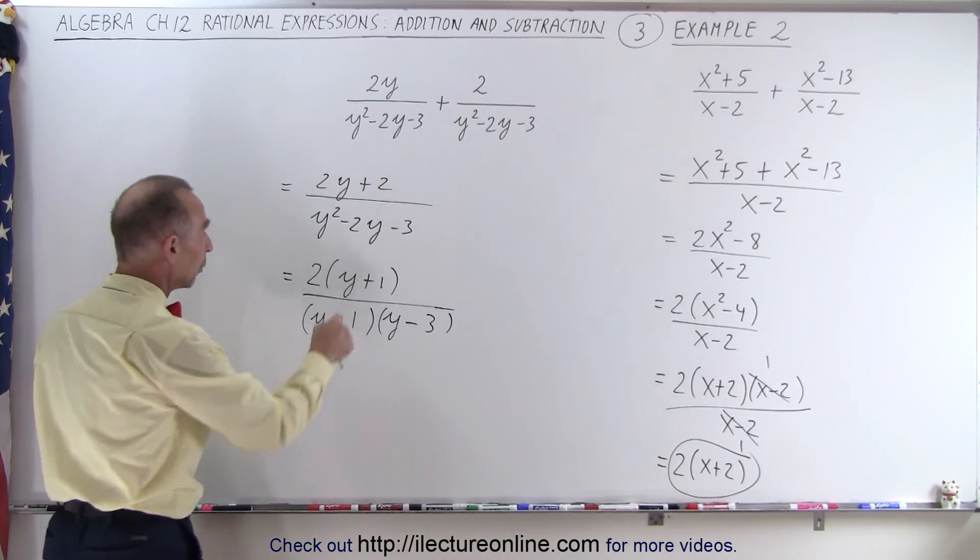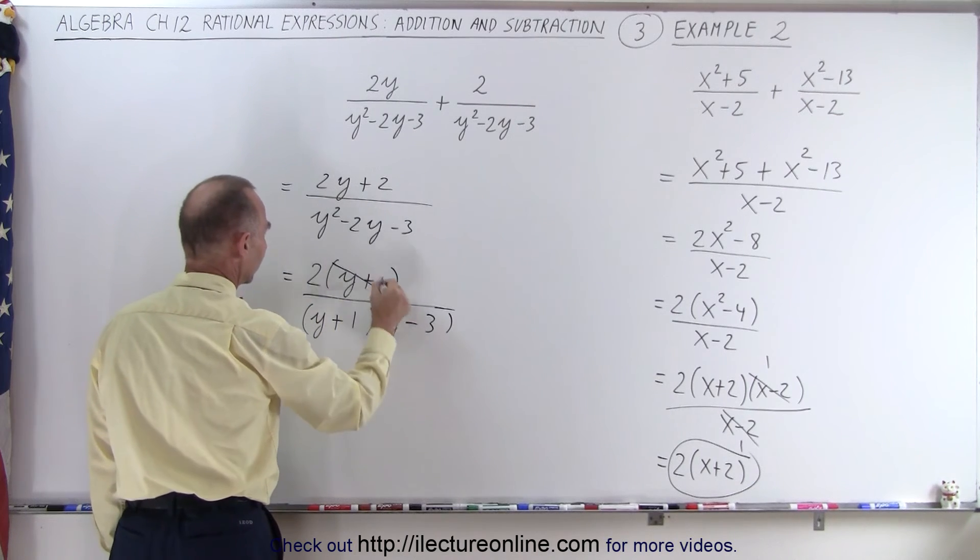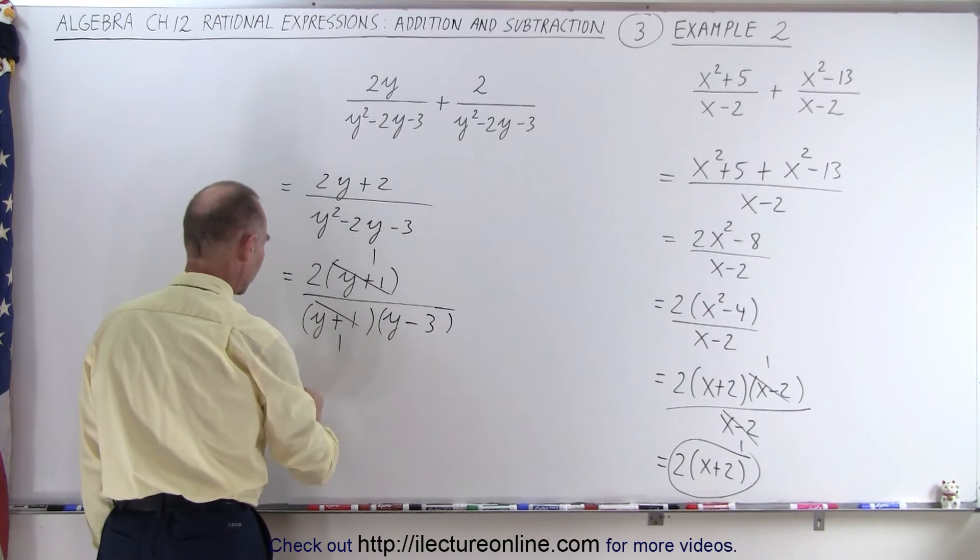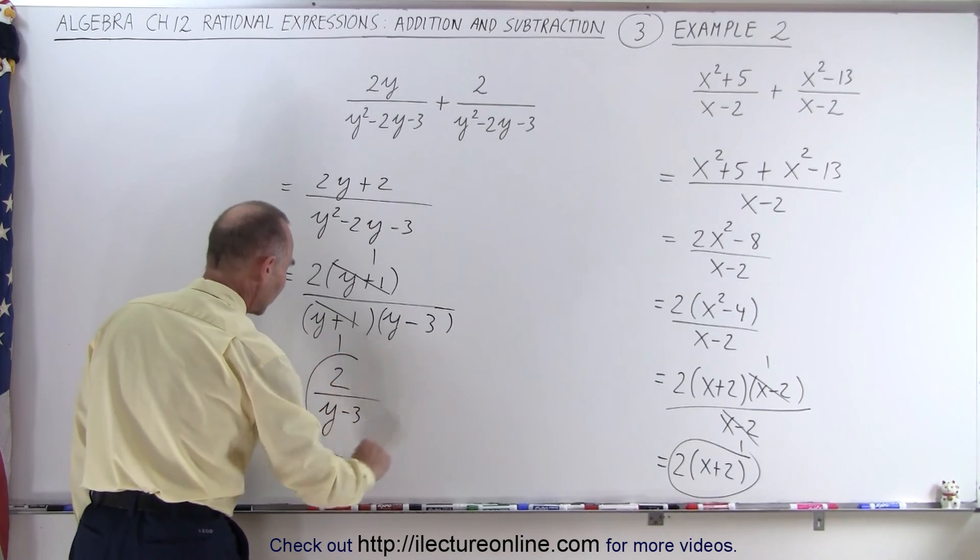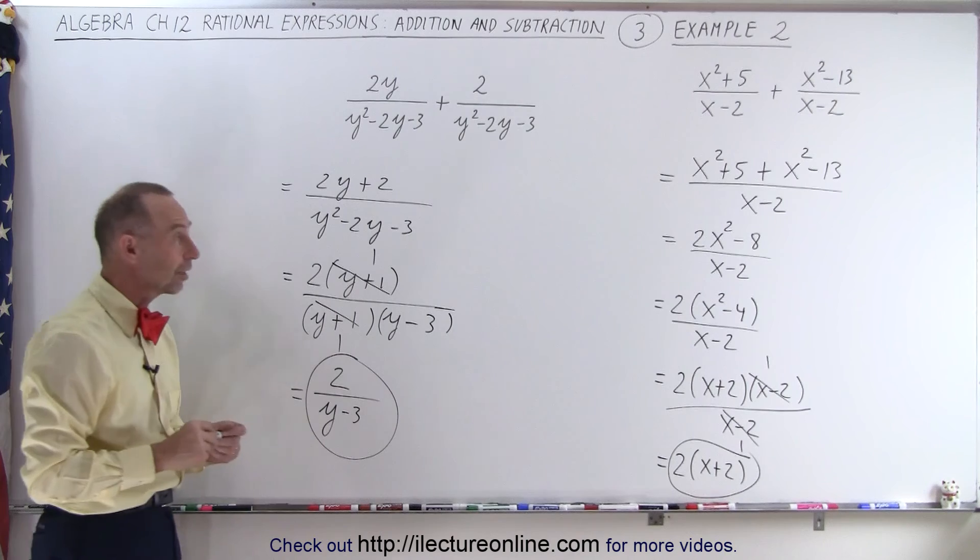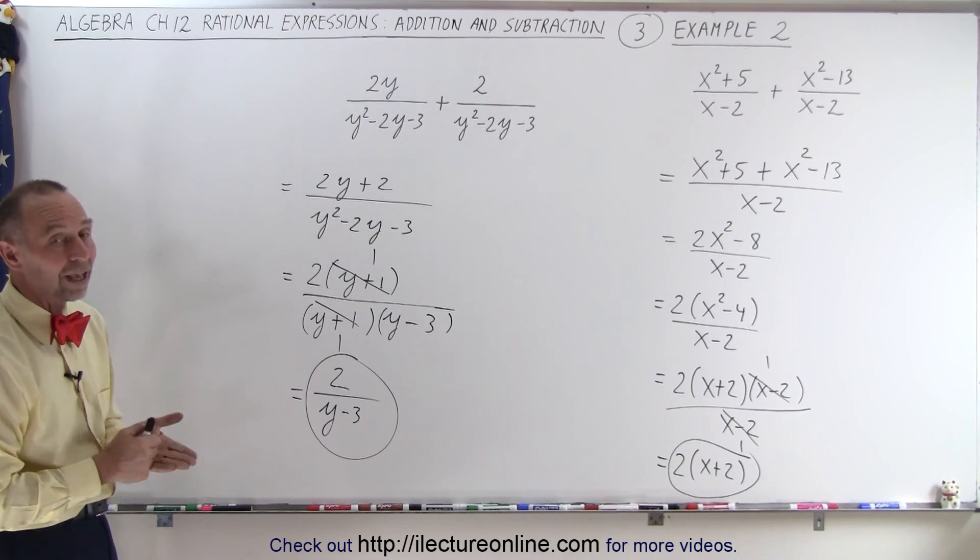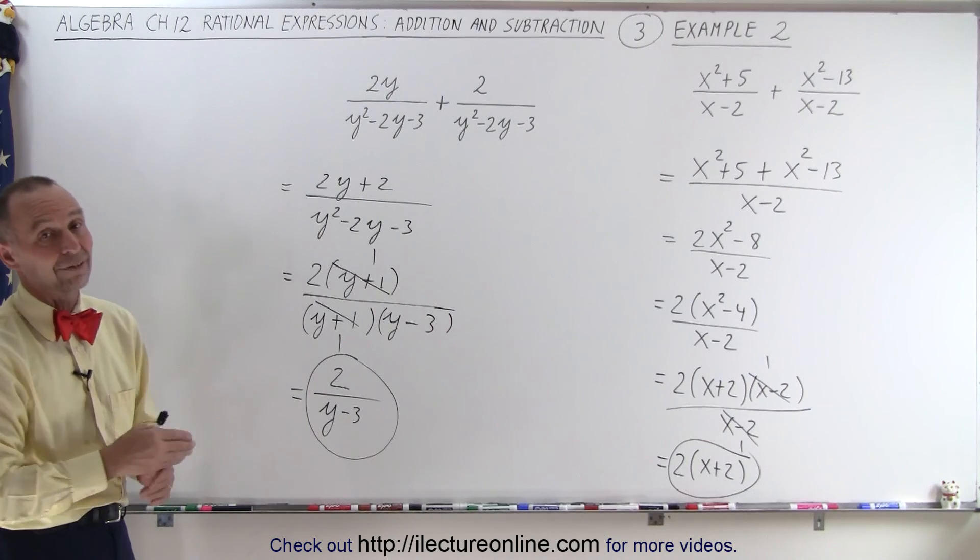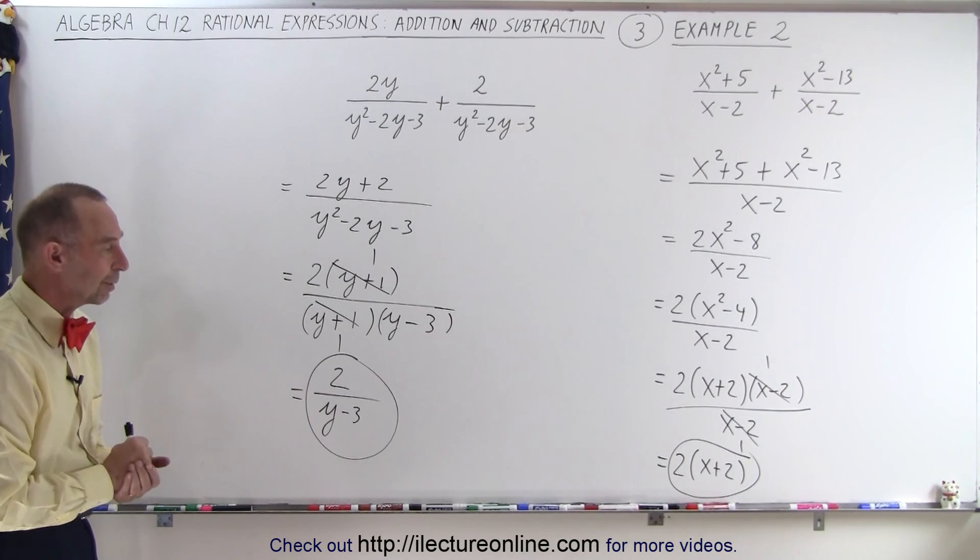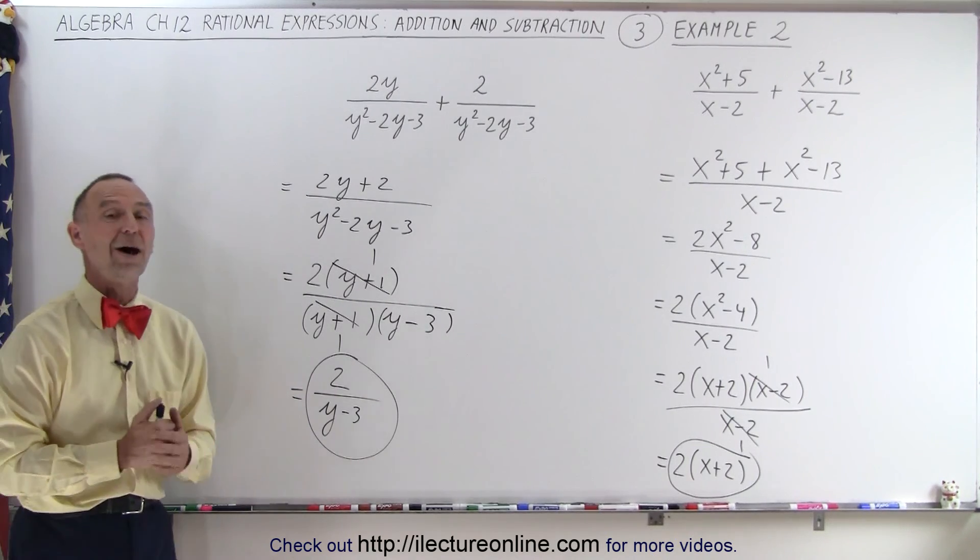Now we can see that a y plus 1 and a y plus 1 cancels. This becomes 1, this becomes 1. So this is equal to 2 divided by y minus 3 as this simplified form. So again, if the denominators are the same, it's not that difficult. But we still typically will have to factor and simplify just like we did before. But that is how it's done.